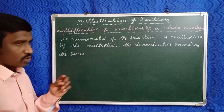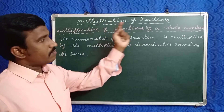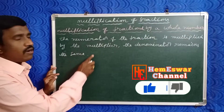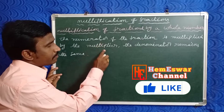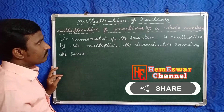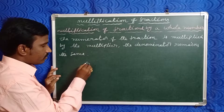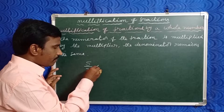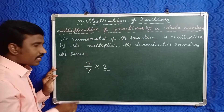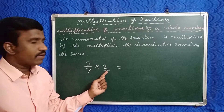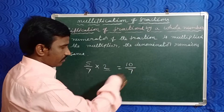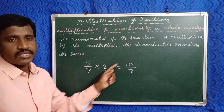Now let's discuss the first model: multiplication of a fractional number by a whole number. In this case, the numerator of the fraction is multiplied by the multiplier, where the multiplier is the whole number, and the denominator remains the same. For example, take the fraction five by seven multiplied by the whole number two. Here the multiplier is two, so multiply with the numerator: five into two equals ten, over the denominator seven. So five by seven into two means ten by seven.